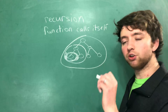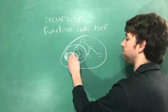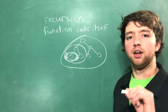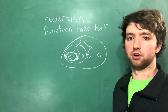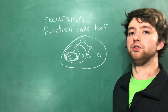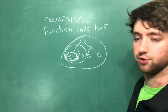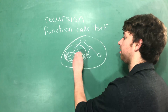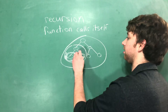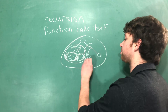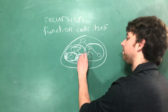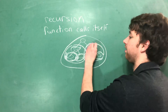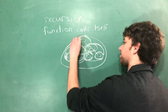You can use recursion to visit all nodes in a tree without knowing how many nodes there are, and that's one really cool thing you can do with recursion. Once you finish this node it'll go to this one, and then it's going to go to this one, and then this group here, this one, then this one, and then finally this one.